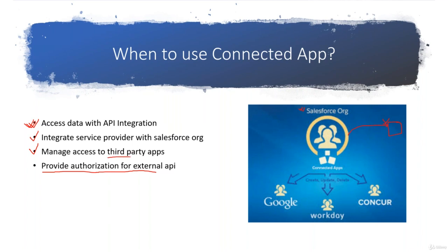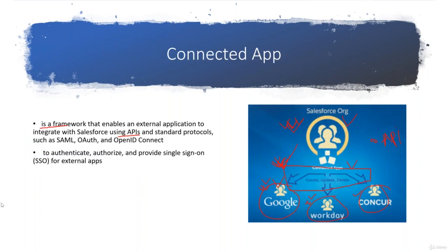Same way, we can provide authorization for external API calls. For those API calls, if you want to control what authorization level they can perform — what kind of scope we are going to define — to control that, we can also create a Connected App. It's nothing but Salesforce acting as an OAuth authorization server for any API gateway. Whenever that kind of scenario arises, you can create a Connected App.